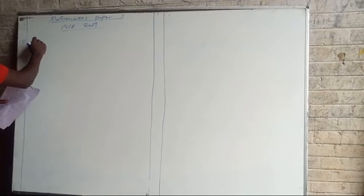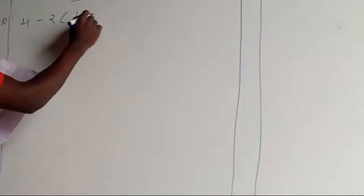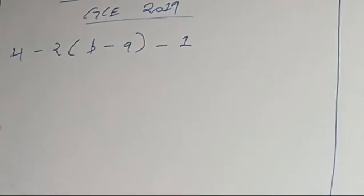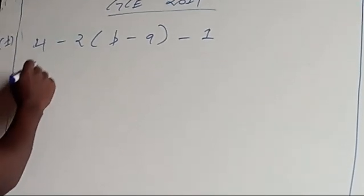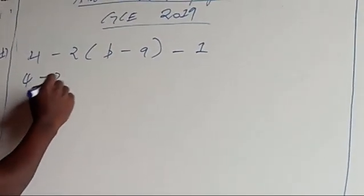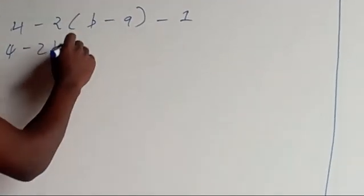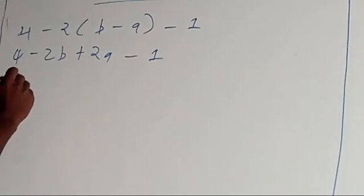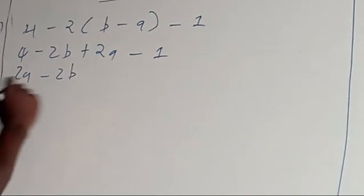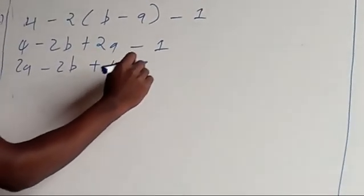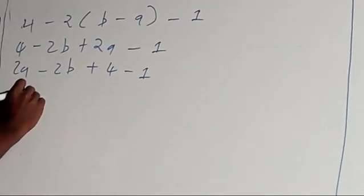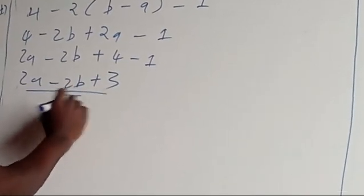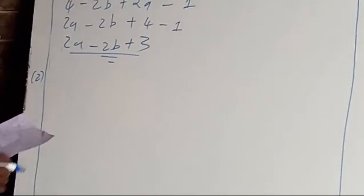The first question reads: simplify 4 - 2(b - a) - 1. To simplify this equation, first I'm going to open up the brackets. So I'll say 4, negative 2 multiplied by b, that's -2b, negative 2 multiplied by negative a, that's positive 2a, minus one. Then I'll collect like terms: 2a - 2b, plus 4 minus 1, that's positive 3. So the answer is 2a - 2b + 3.